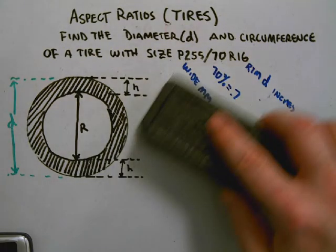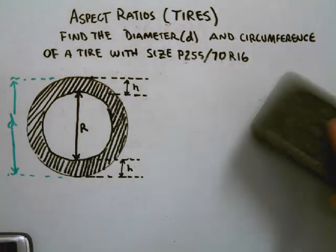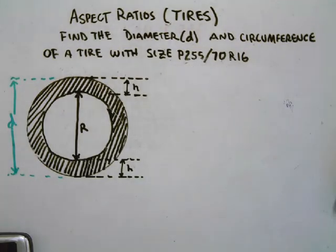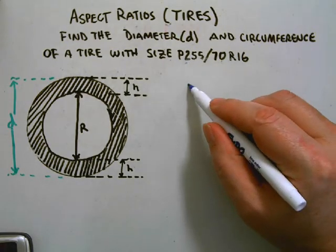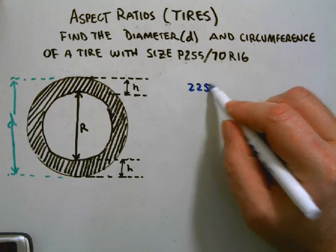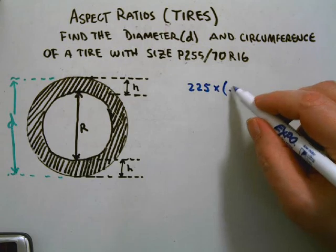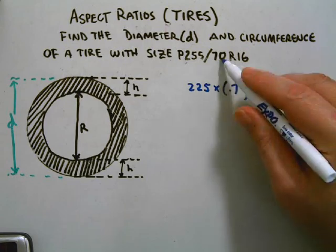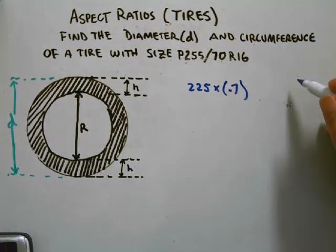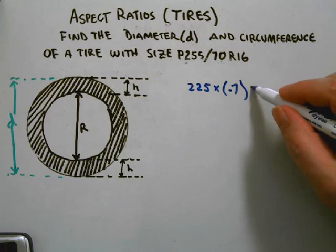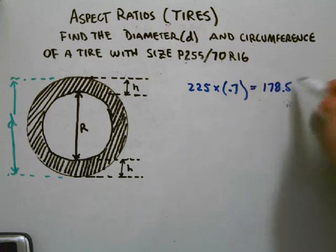Basically what I do is I start out with the width and multiply it times the percentage in decimals. So it's a 70 converted to decimal, which is 0.7, and I multiply that out and I get 178.5. Remember, that's in millimeters.